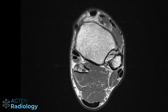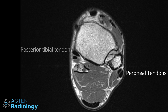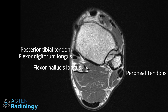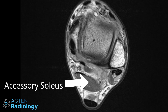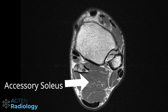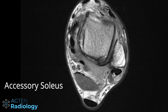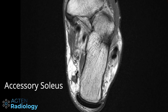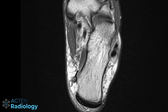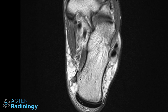We have the normal tendons: the peroneal tendons, the flexor tendons — the PTT, then the flexor digitorum longus, and the flexor hallucis longus — and then the accessory soleus here. This is the Achilles tendon with the normal soleus, and this is just the accessory soleus muscle with its corresponding tendon inserting here onto the medial aspect of the calcaneus.